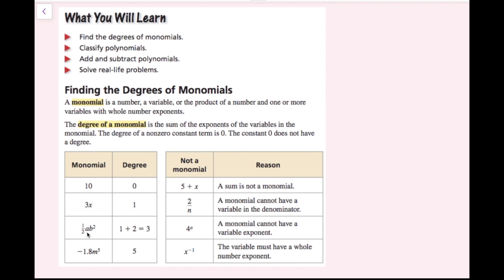3x can be thought of as 3x to the power of 1, so that's degree 1. For one-half a times b squared, there are two different variables, so we add the exponents: a to the 1 and b to the 2, so 1 plus 2 is 3. Then negative 1.8 times m to the fifth power has degree 5.